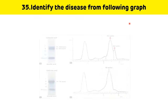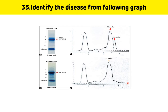Identify the disease from the following graph. This is basically an electrophoretogram. In normal patients, five bands are seen: albumin, alpha-1, alpha-2, beta, and gamma. However, there is also the presence of an M-band between the beta and gamma regions. This M-band is specifically seen in multiple myeloma, which is a monoclonal gammopathy.